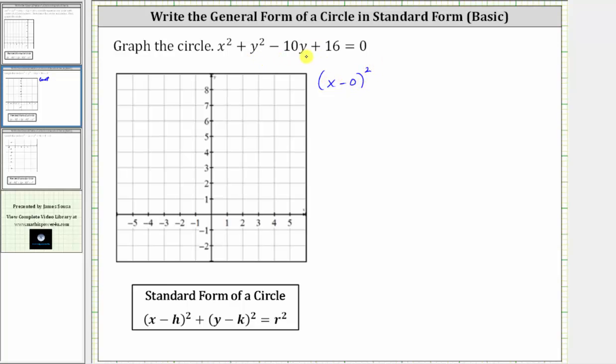And then we have a y² and y term. And therefore, we will have to complete the square on the y part to make a perfect square trinomial to write the y part in the form of the quantity (y - k)². So let's write this as plus y² - 10y. To complete the square, we'll have to add a constant here. So let's write plus blank. And let's subtract 16 on both sides so we have equals -16.